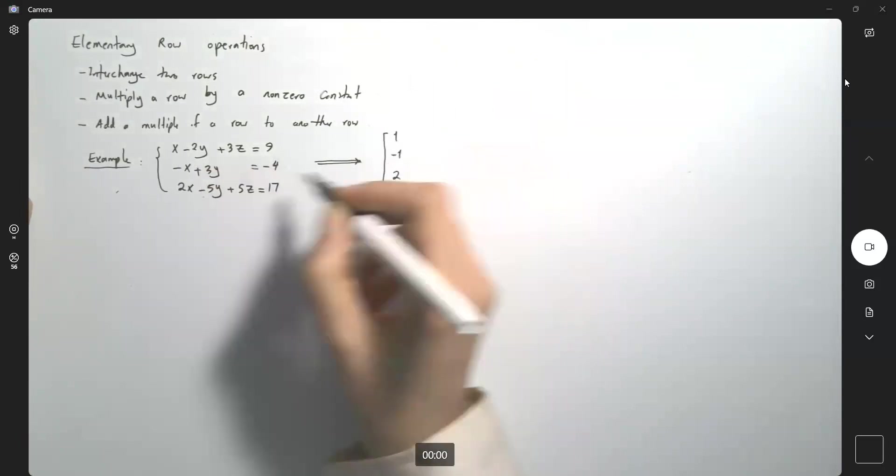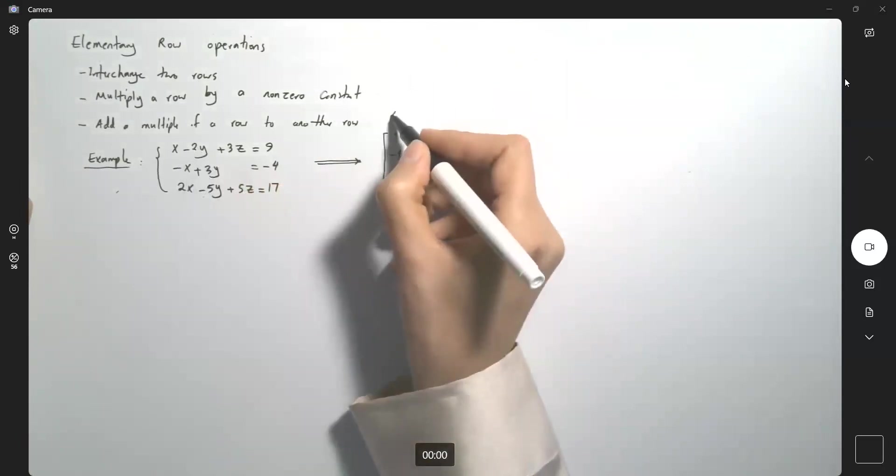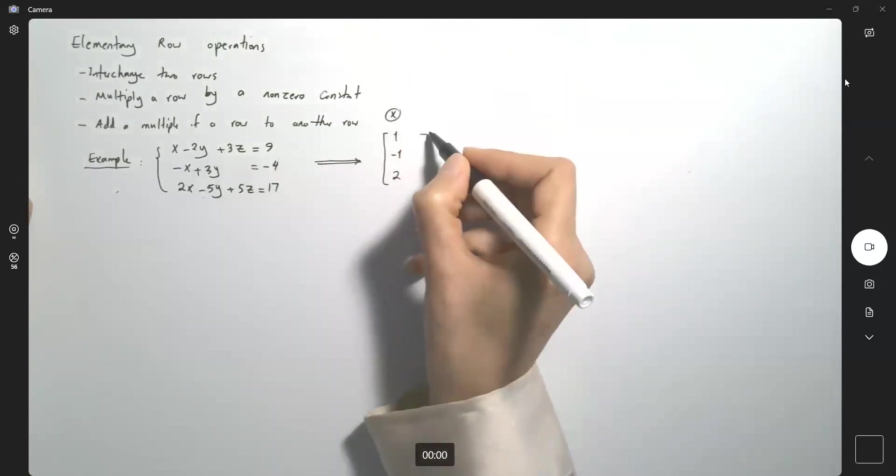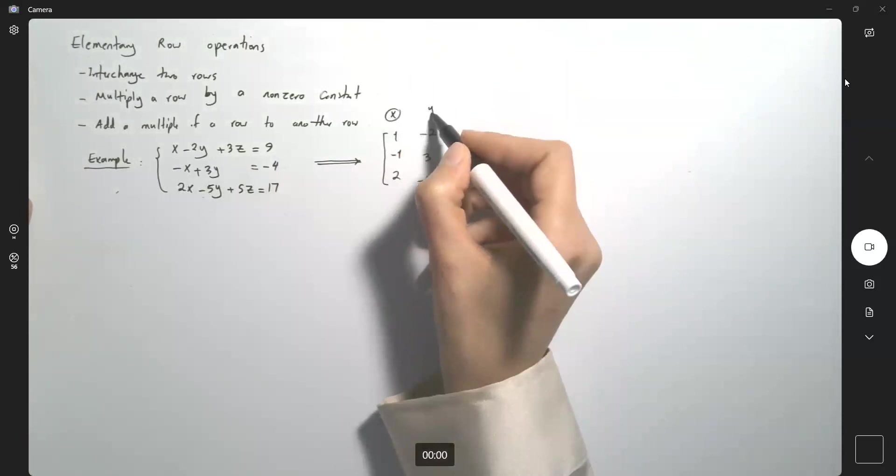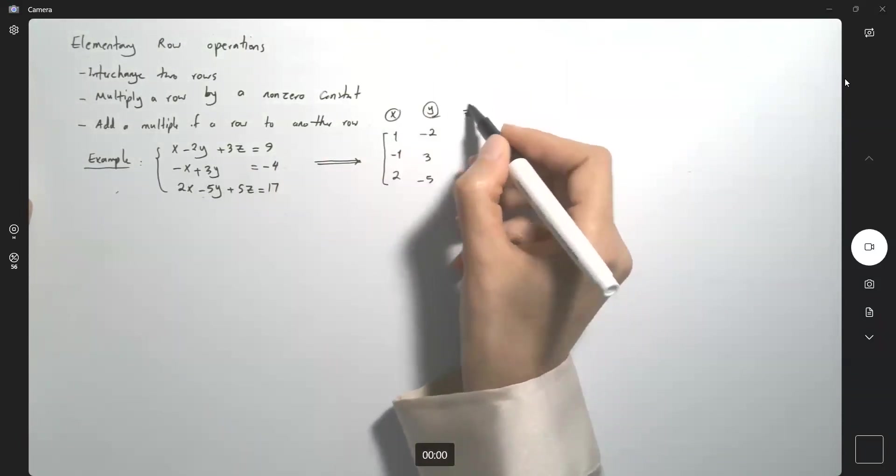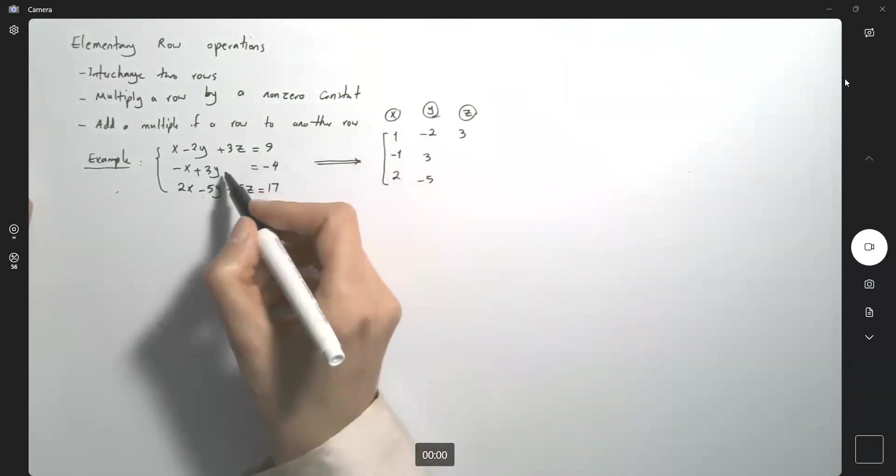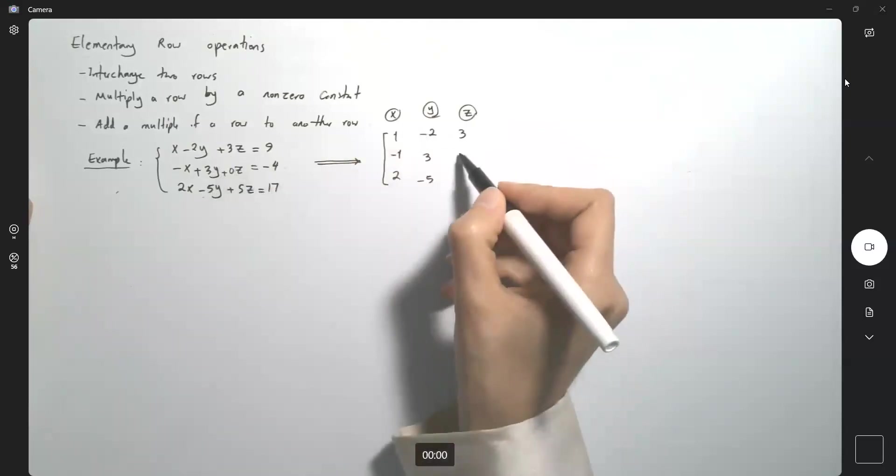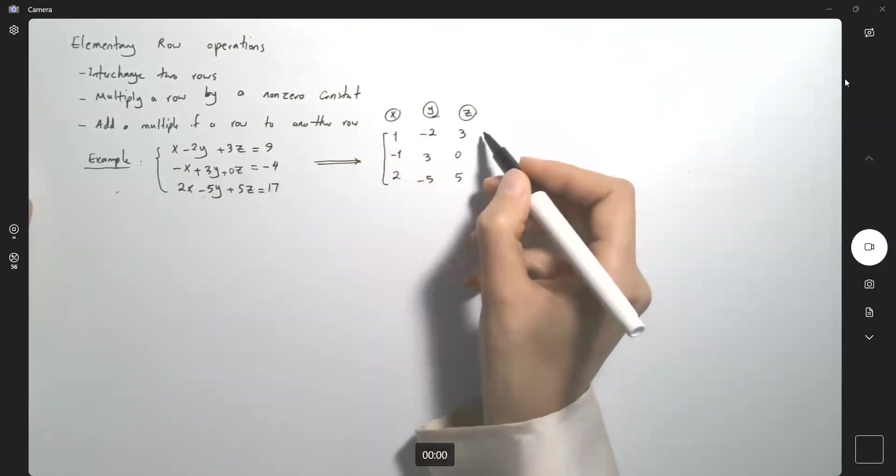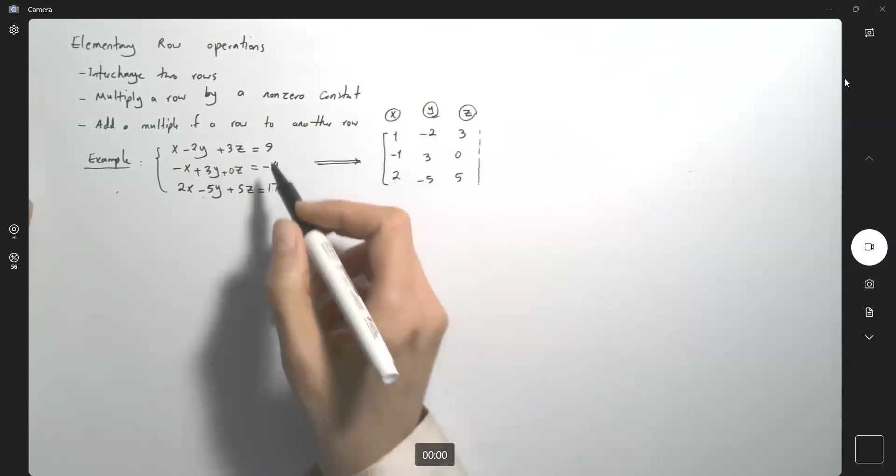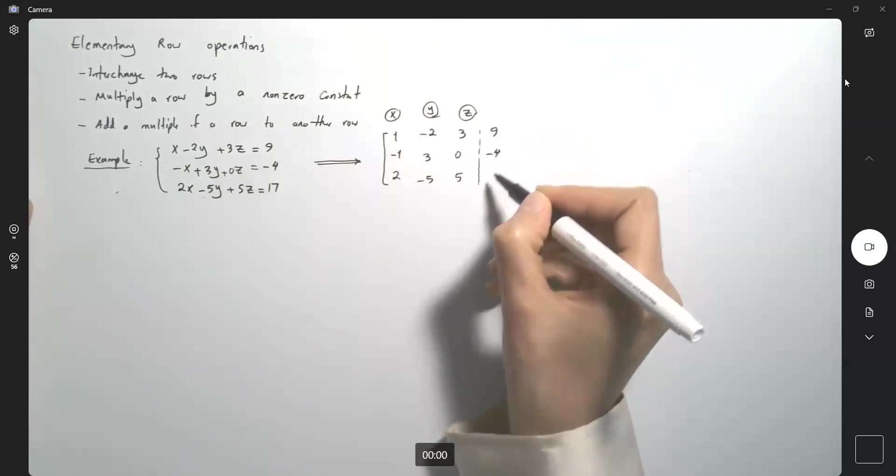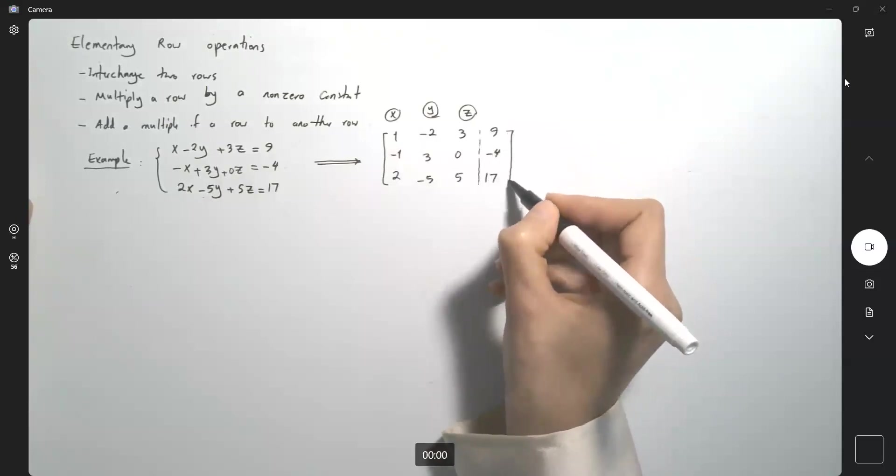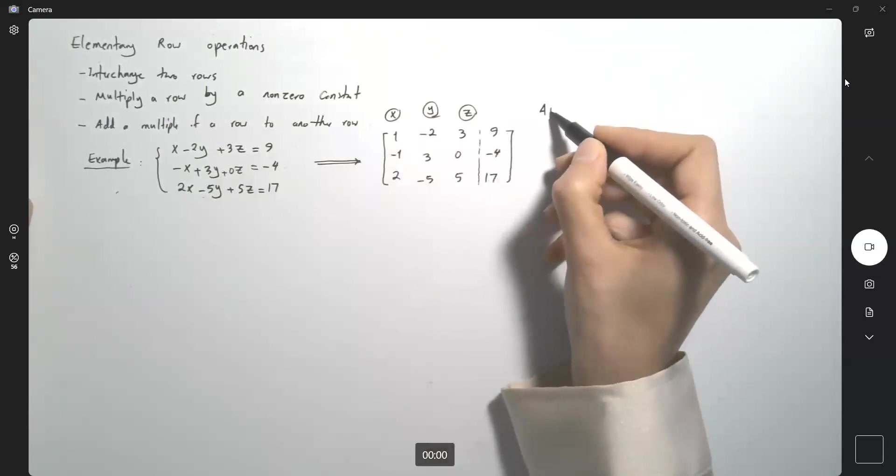In the second column, you have the coefficient of y's. So here you have minus 2, 3, negative 5. And here you have the coefficient for z, which is 3. Here you have 0 times z and here you have a 5. And on the very last column, you're going to have the constants 9, negative 4 and 17. So this is called augmented matrix.